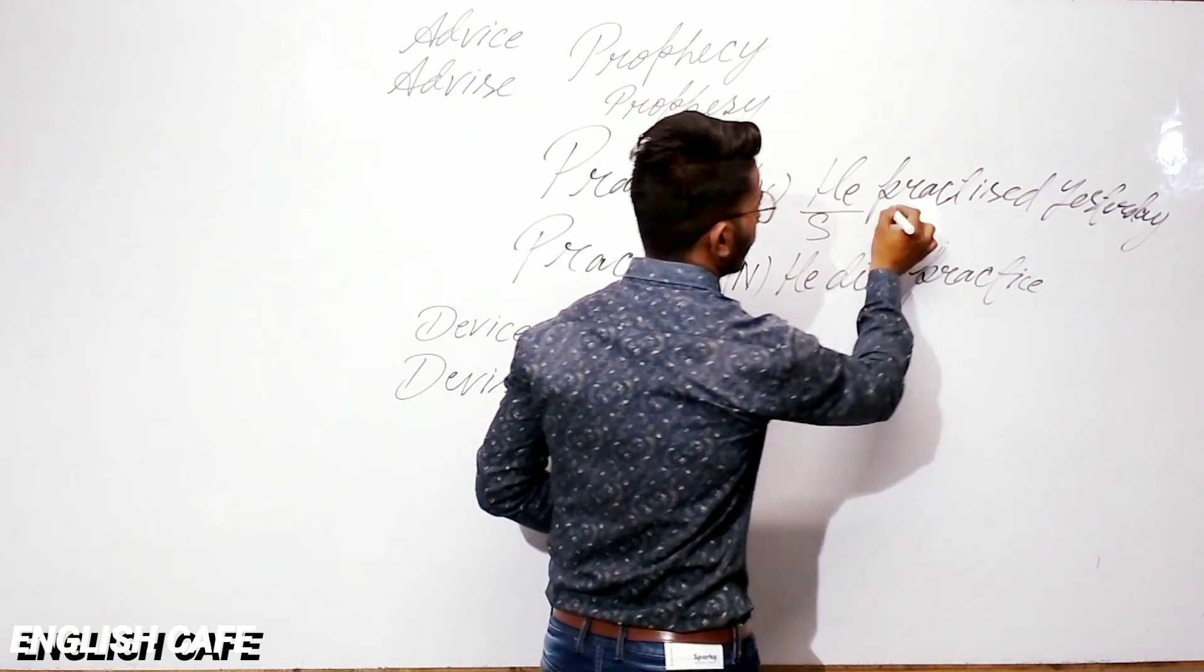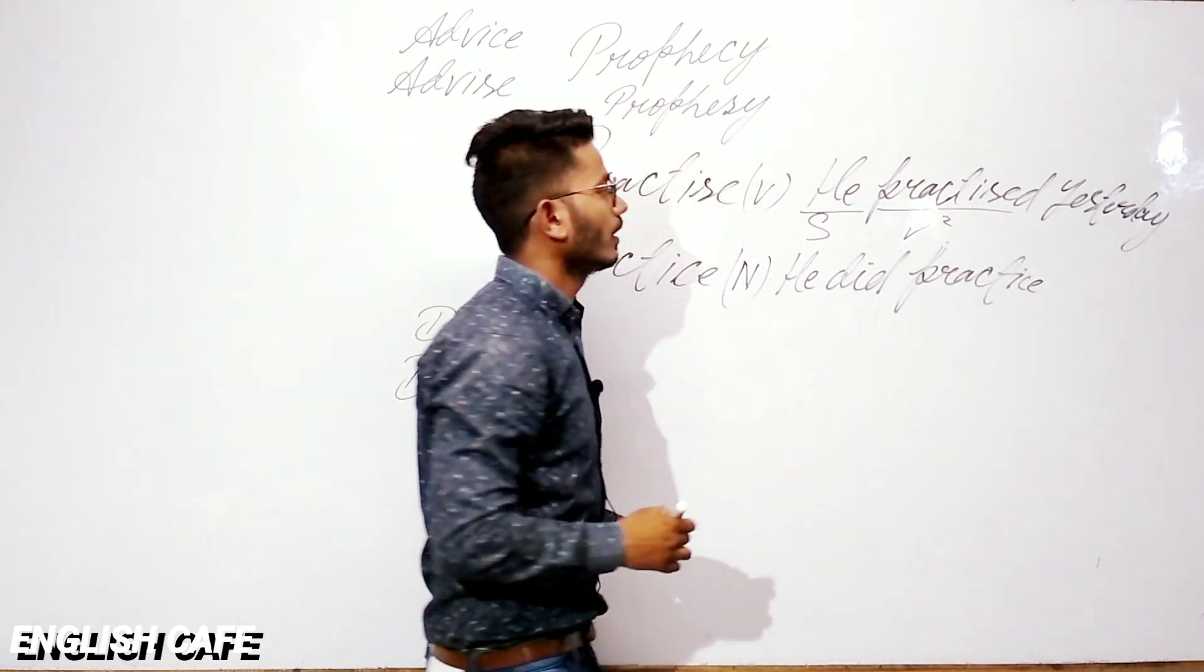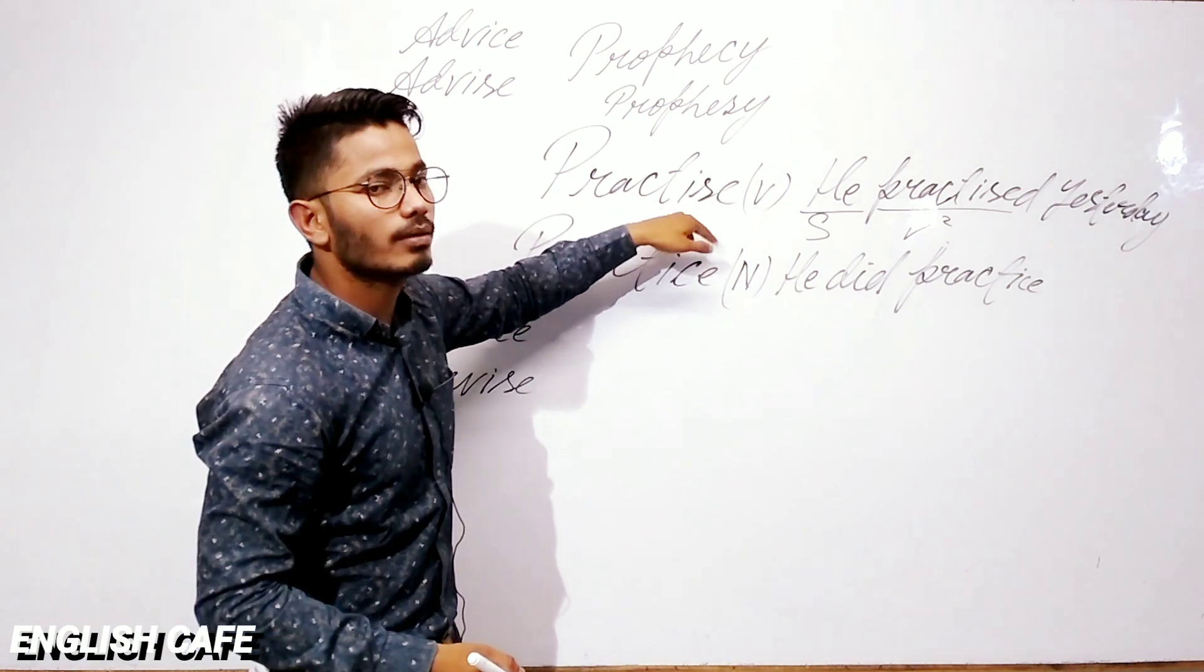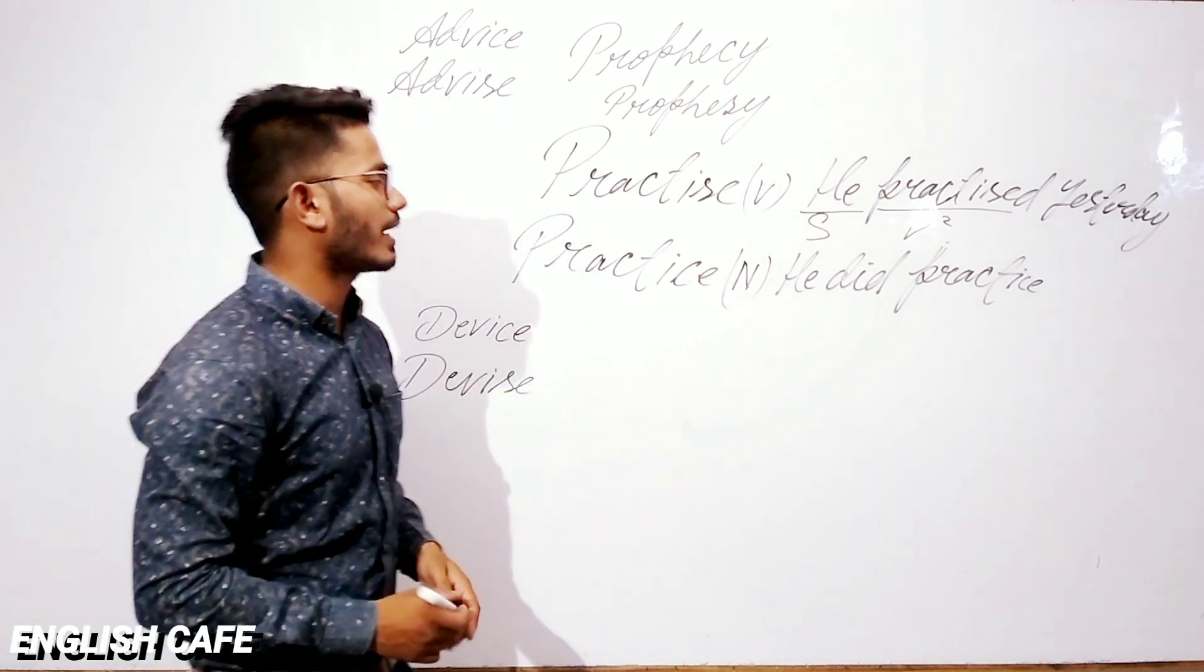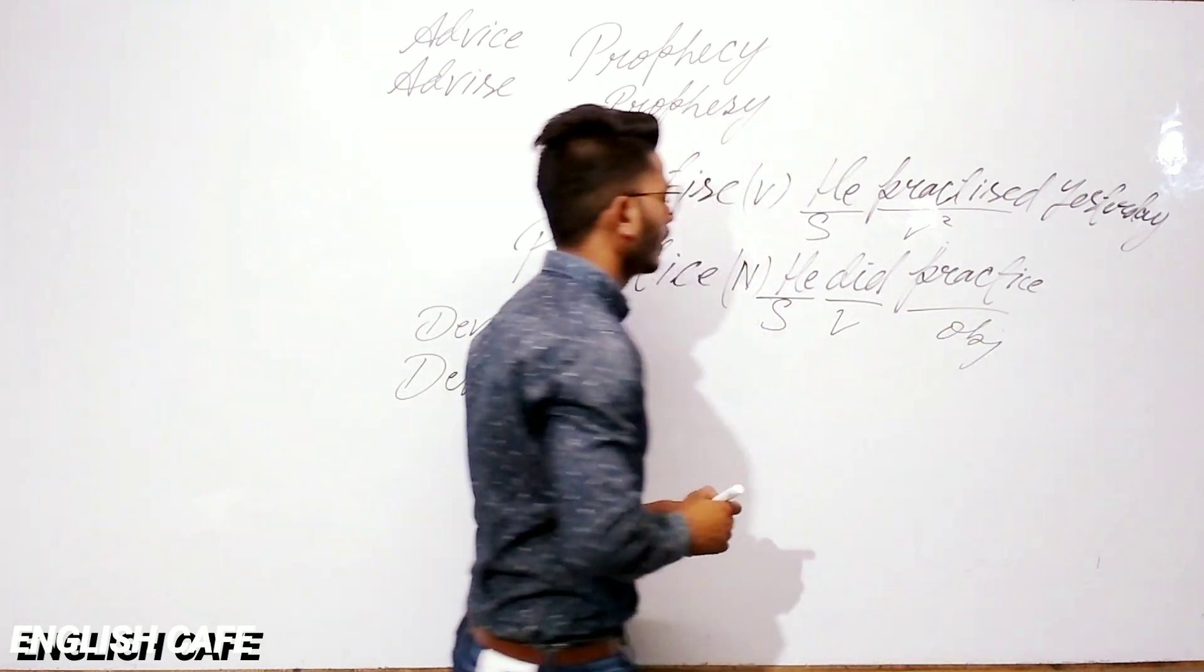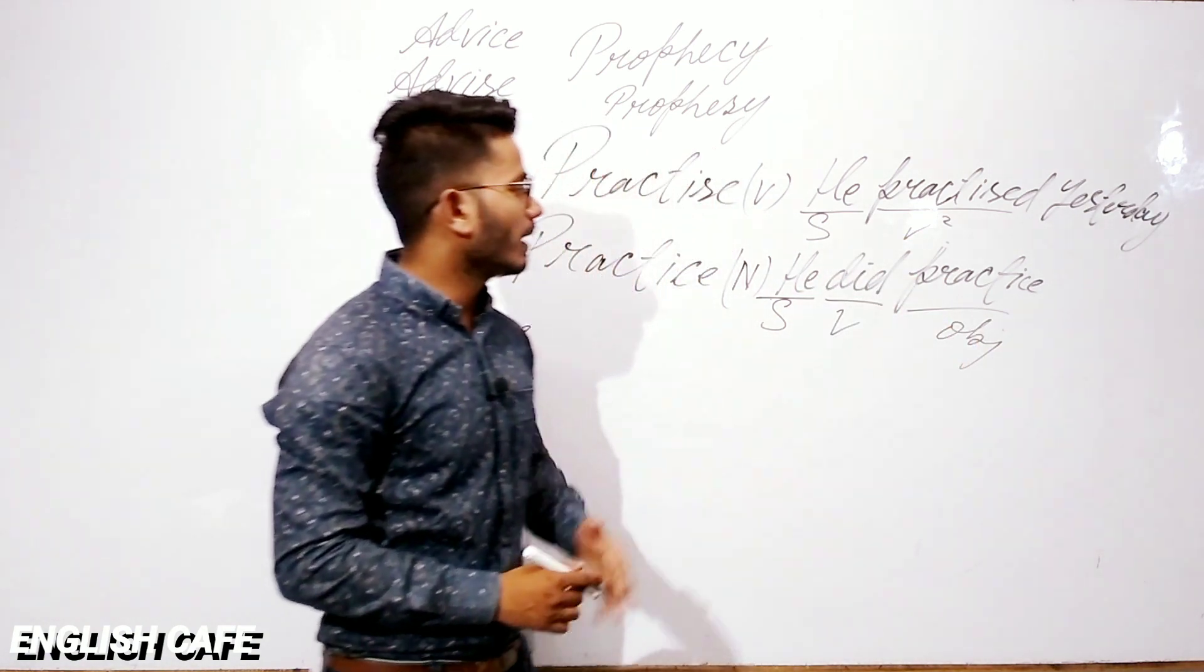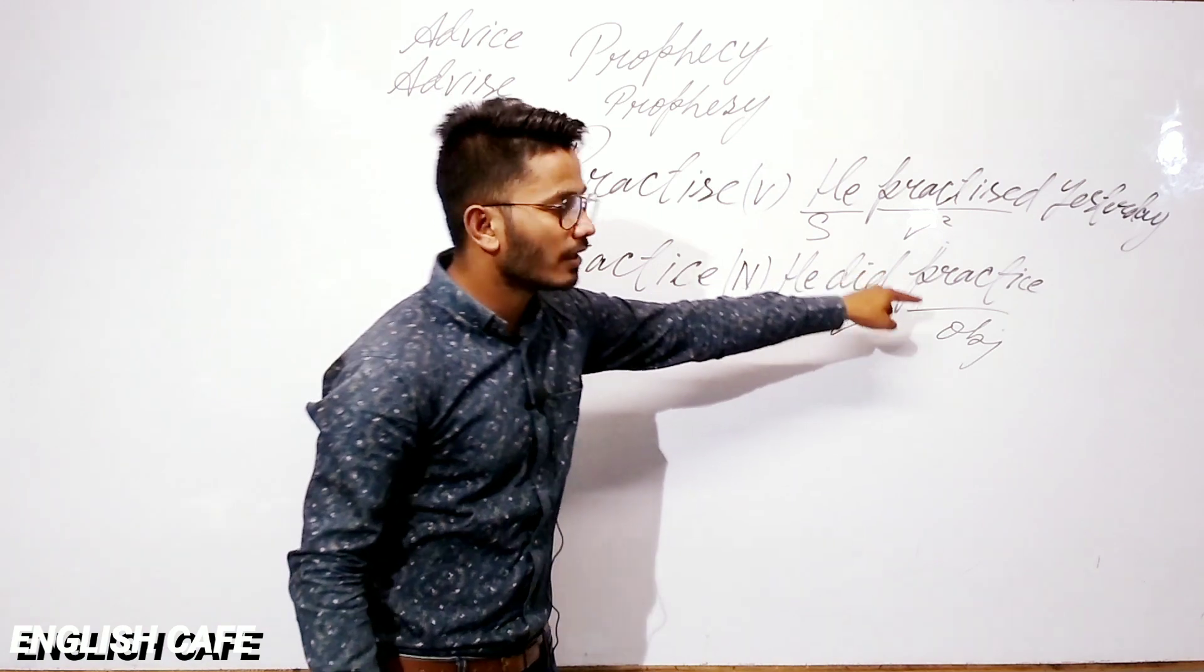You can see it. He practiced yesterday. This is a subject. And you need to make a verb sentence. The second form is a verb. Obviously, we need to use this verb. We need to use this verb and practice to use it. And it's a verb that we use it. This is the second example. He did practice. This is subject and this is verb. And this is an object. He did what? What? It is a verb. He did something. What? He did practice.